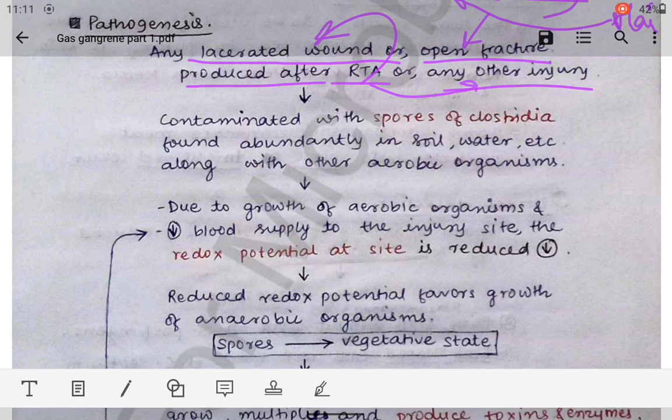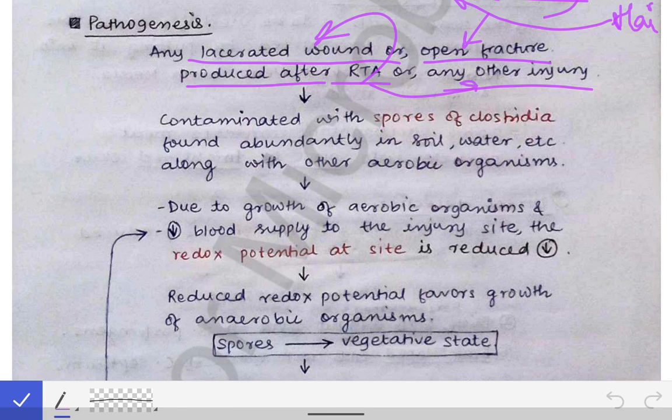Whenever a lacerated wound occurs, there is contamination of that wound with spores of Clostridium. Clostridium spores are abundantly present in soil, water, and air. Since soil is everywhere on roads, it very easily contaminates open wounds, allowing spores to enter. This contamination is an inevitable consequence of road traffic accidents with open injuries.